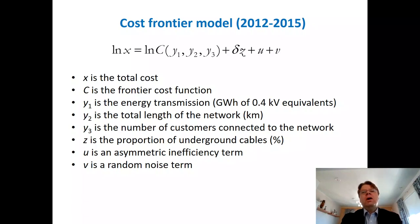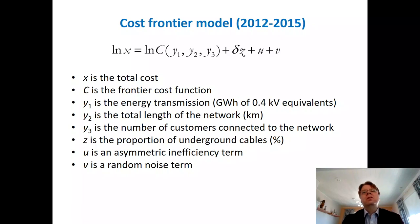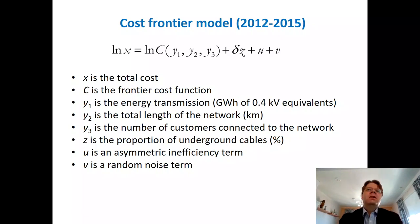Recall from the production function case, we had U and V. U was the inefficiency term and V was the error term, which we call random noise. Notice now that U has a positive sign rather than minus. In the case of the frontier production function, inefficiency had a negative sign because any deviation due to inefficiency would decrease the output. When we talk about the cost frontier, the inefficiency term is one-sided but has a positive sign — whenever there is inefficiency in the cost frontier framework, it increases the cost rather than decreasing it.